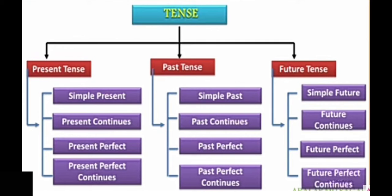Firstly, present tense has four: simple present tense, present continuous tense, present perfect tense, present perfect continuous tense. In past tense also there are four subdivisions: simple past, past continuous, past perfect, past perfect continuous. In future also there are four subdivisions: simple future, future continuous, future perfect, future perfect continuous.